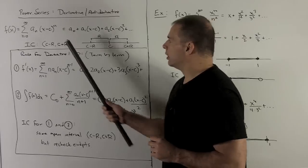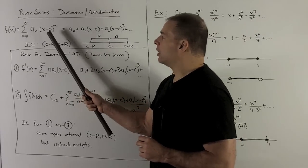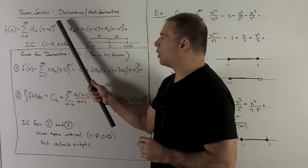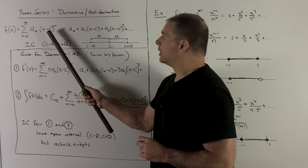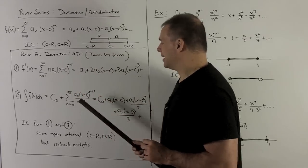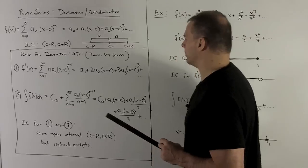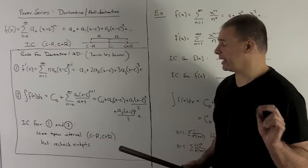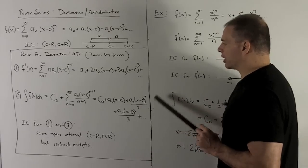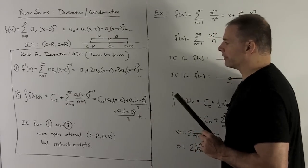And then in general, you'll note, what are we going to do here? Same idea. We'll have u to the n. So we'll add one and flip it over. So that's going to give me a sub n times x minus c to the n plus one, divided by n plus one. And then our c and our a zero x minus c have already been taken care of. So that's going to be our general formula for an antiderivative.